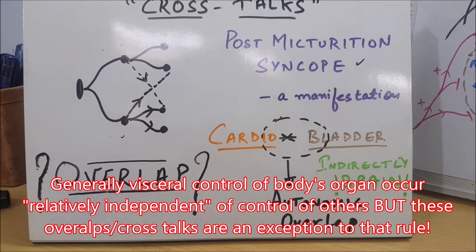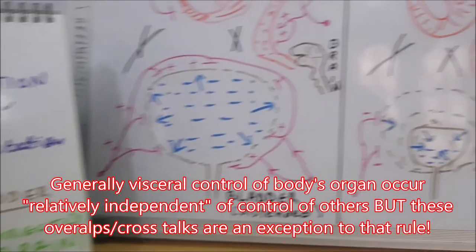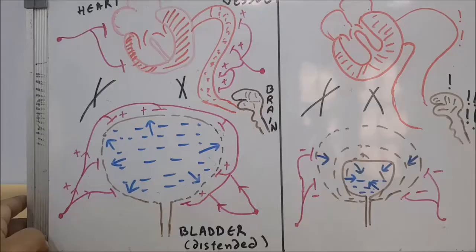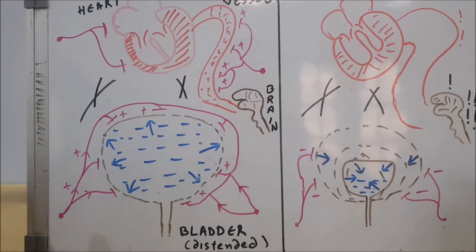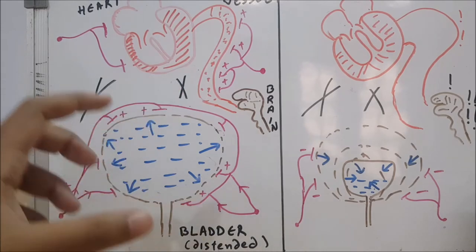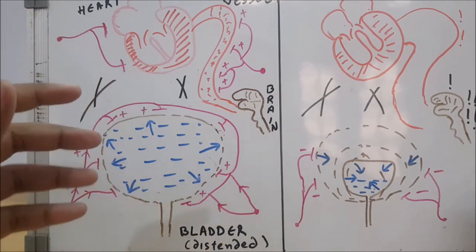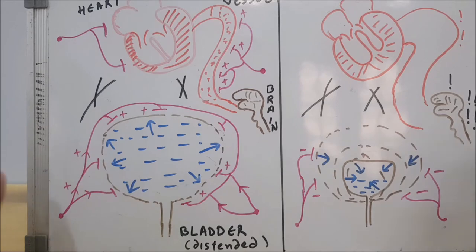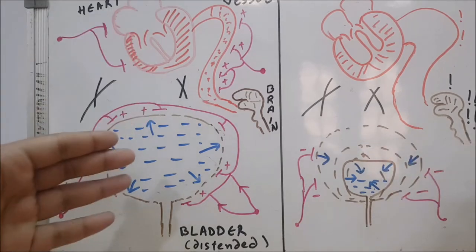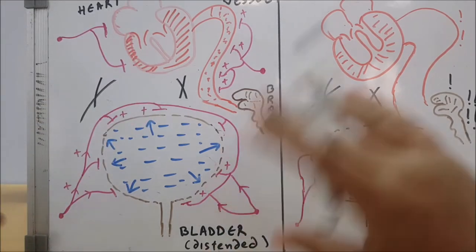Now let us quickly see its explanation. We have here segment A and segment B. This is the part where our bladder is distended. Let's take it as a picture—your bladder is distended, you want to pee, you go to bathroom and you have some degree of overlap between your cardiac and bladder autonomic nervous system.